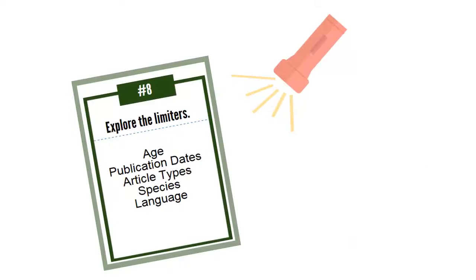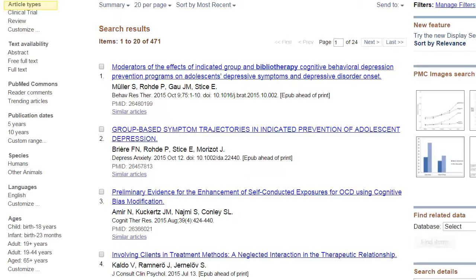Number eight: explore the limiters. Since PubMed is such a big database, there are times when you'll need to focus your search. You can limit by article type, publication date, species, language, age, and more. Check them out.